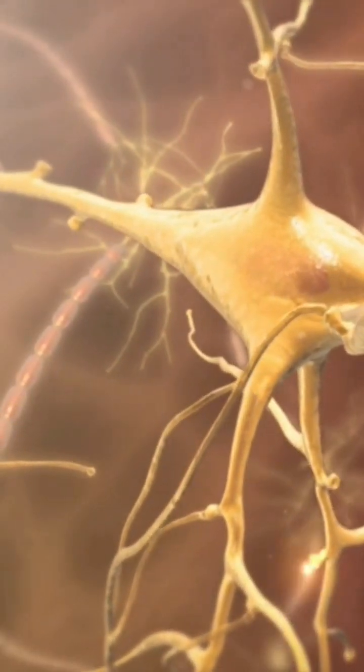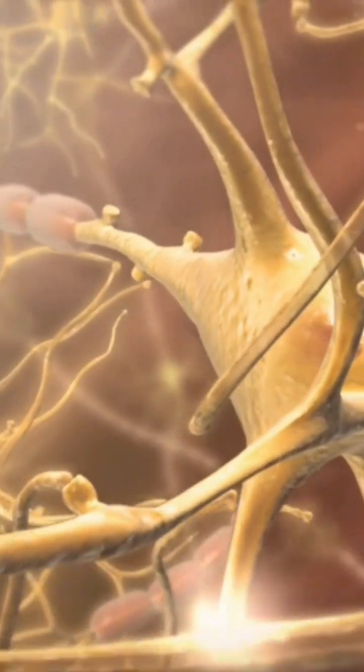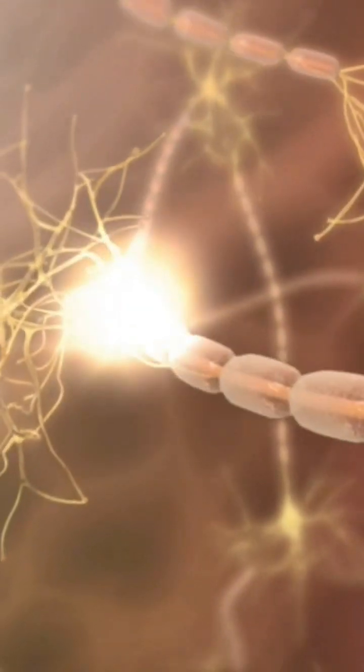At one end of a neuron are dendrites that receive a messaging signal. In the neuron's axon, a chain reaction moves the message to the synapse, where the signal is transferred.